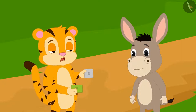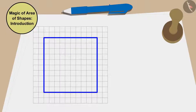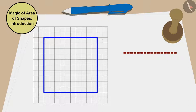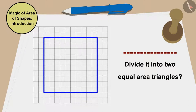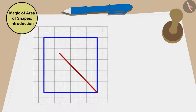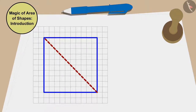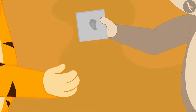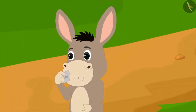Sher Khan was shocked. Children, can you divide the shape of this cashew barfi by just drawing a straight line to create two equal area triangles? You can find a solution by stopping the video. Well done, children. Your answer is absolutely correct. We can make this line in this way too. Sher Khan gave the barfi to Bholla and Bholla ate it happily.